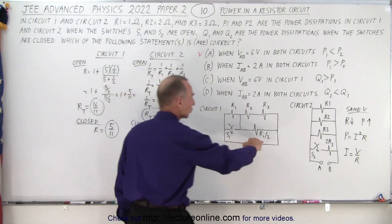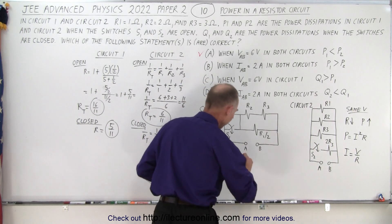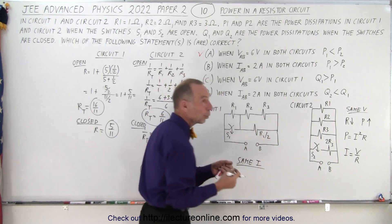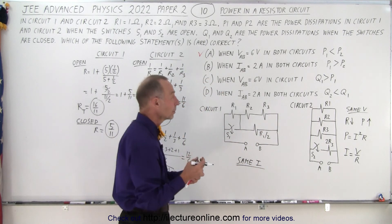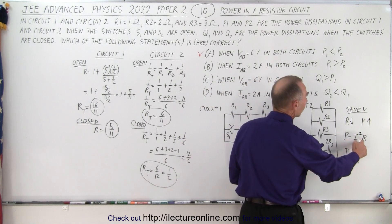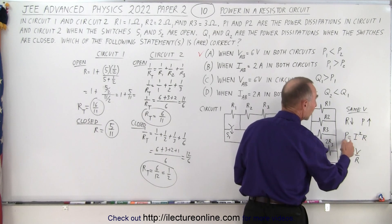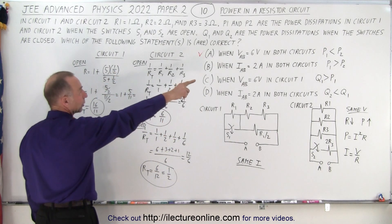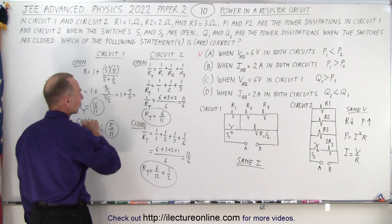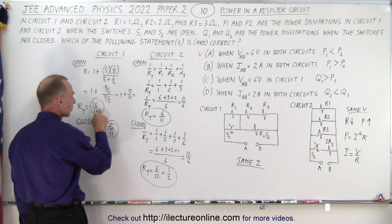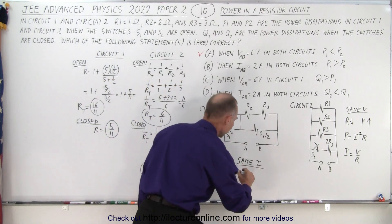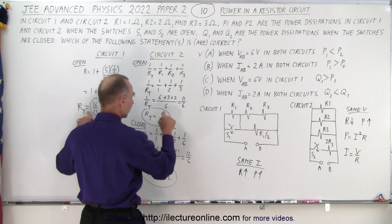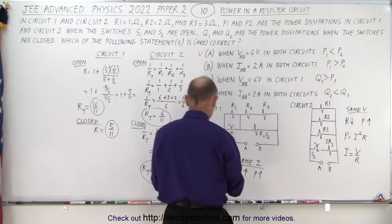Now what happens when the same current is applied? When the current is the same through the circuit, then the one with the greater resistance has greater power dissipation — it's the other way around compared to same voltage. The switch is still open since we're dealing with P's. Circuit 1 has the larger resistance (16/11) and circuit 2 has the smaller resistance (6/11), so P1 must be bigger than P2. That is correct as well.